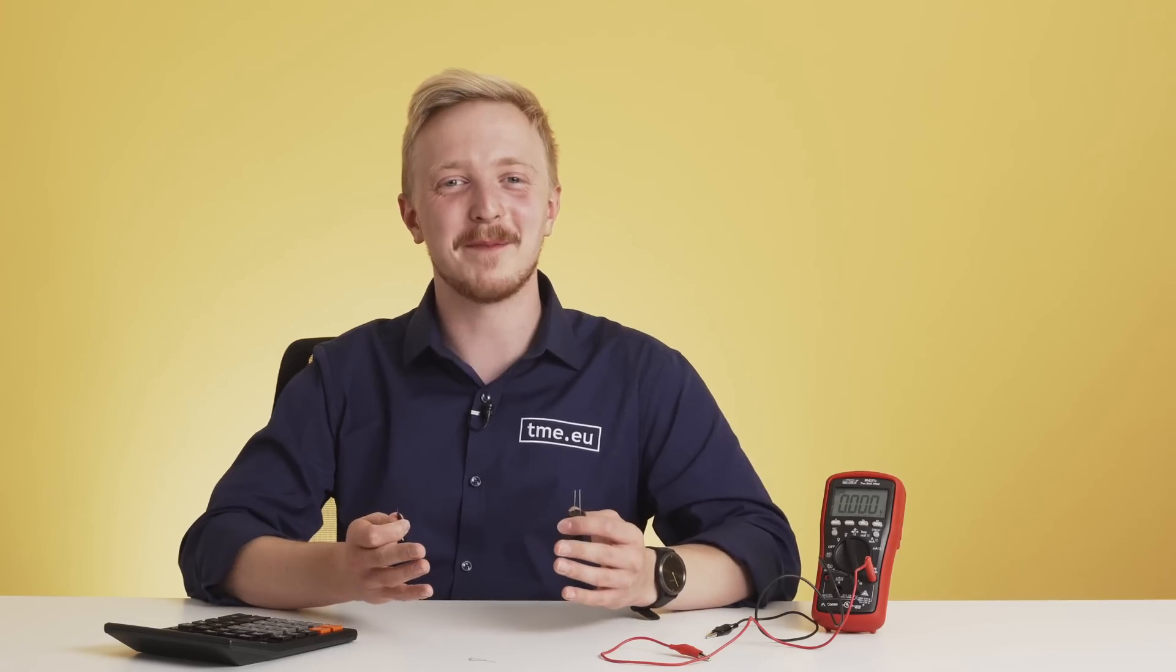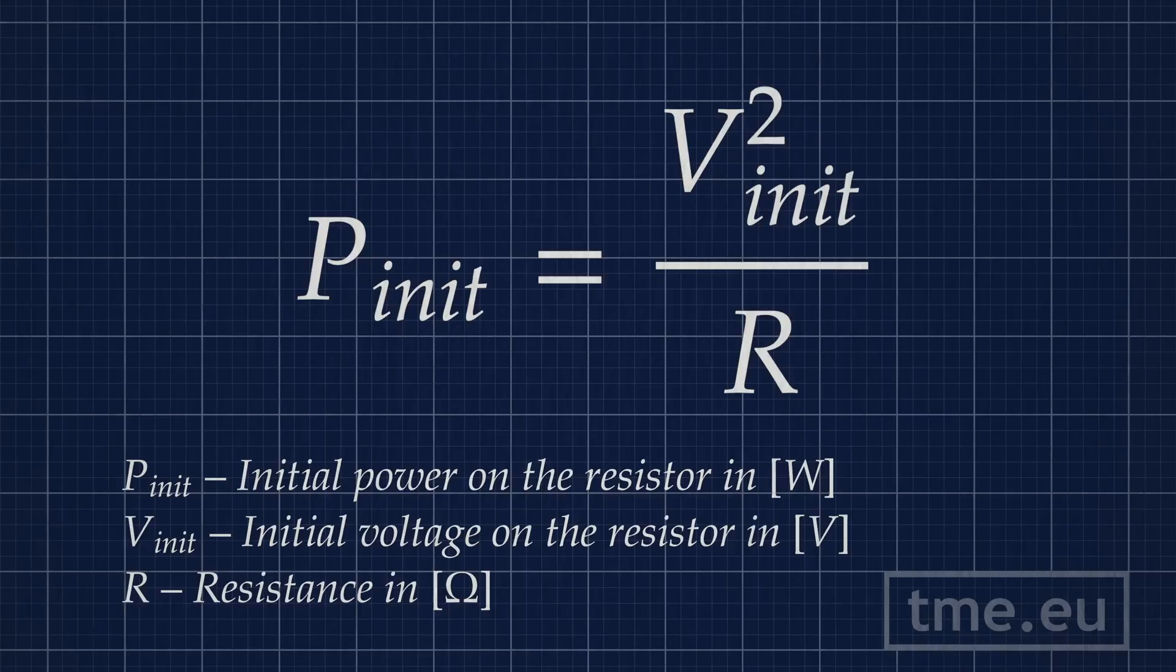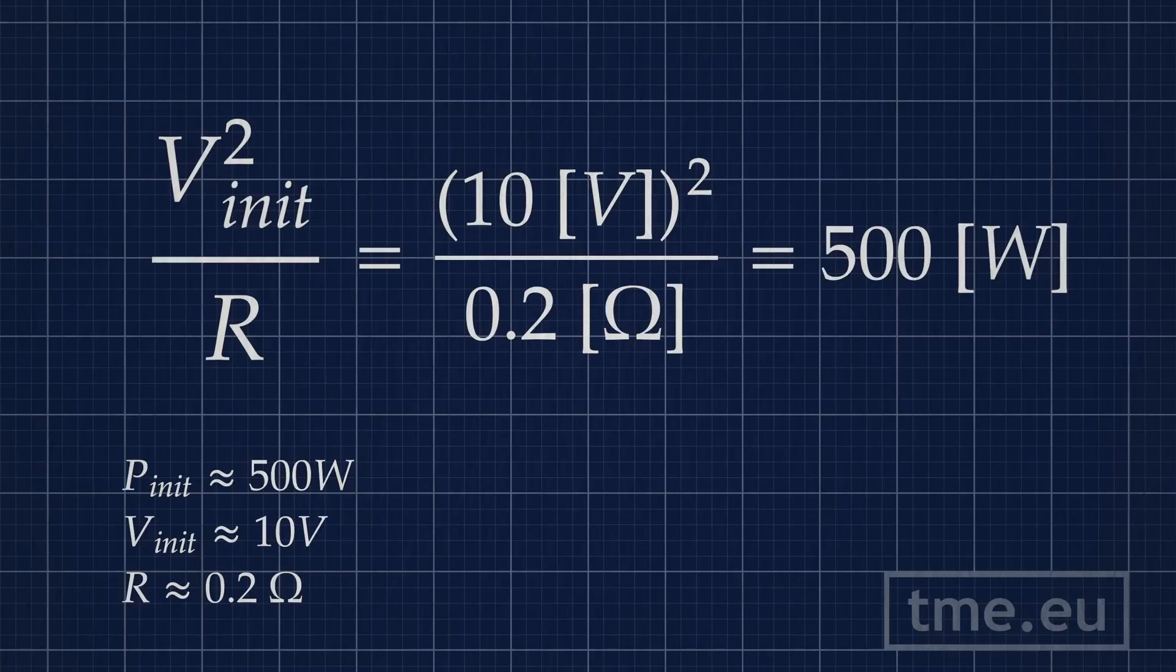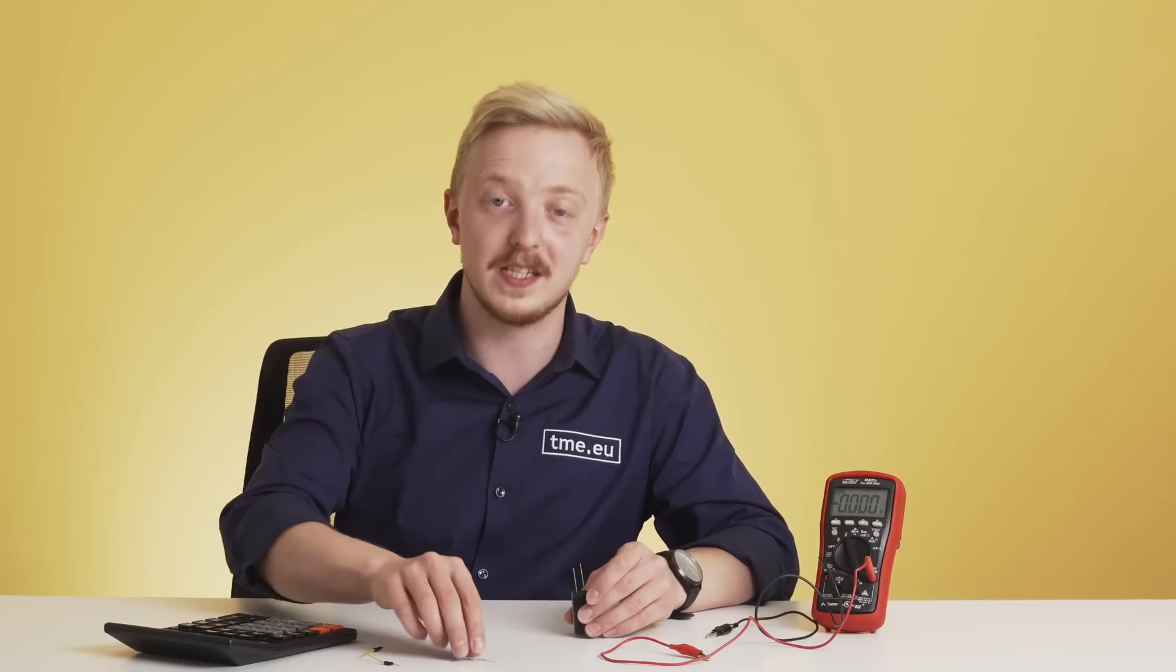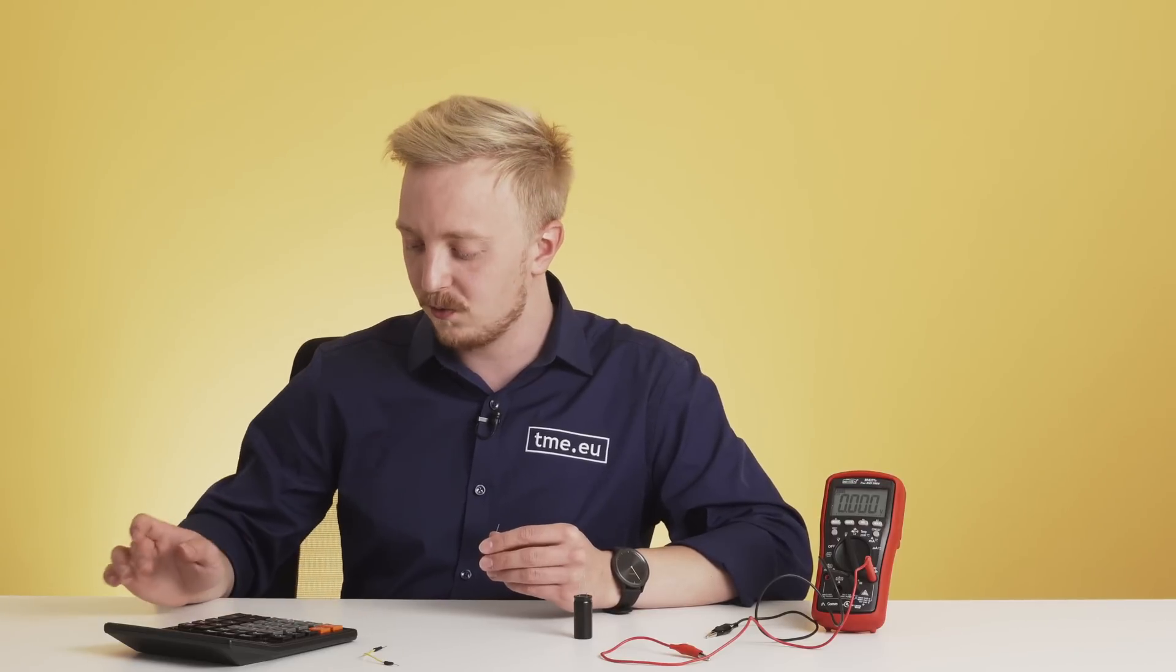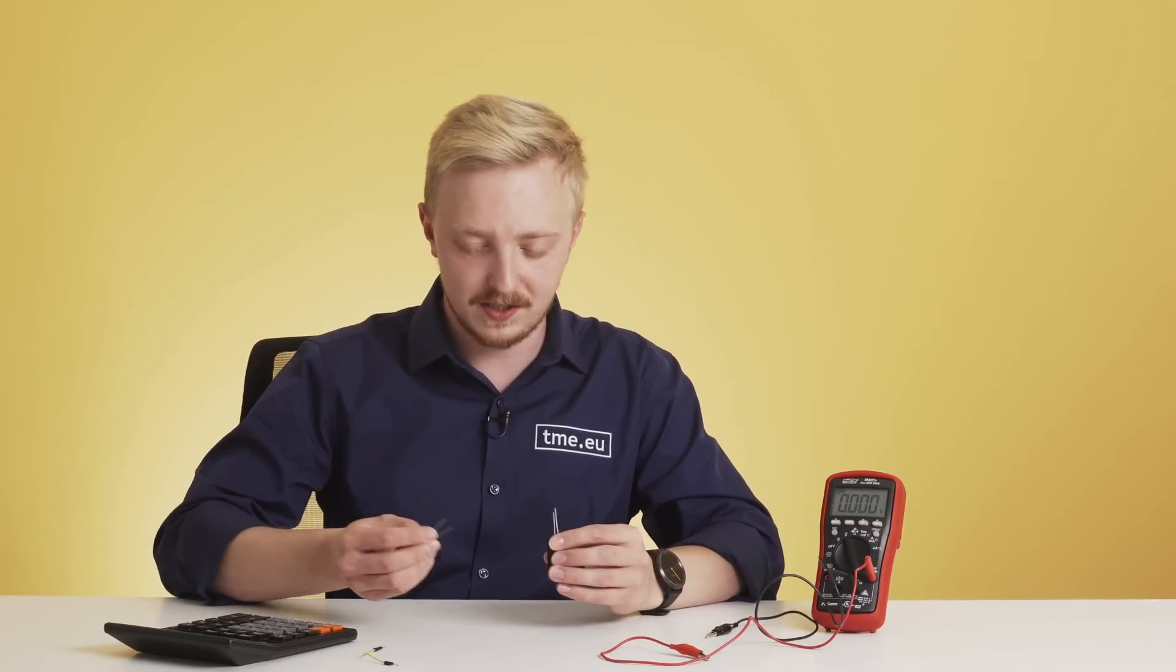Well, why did it happen? That was the initial power I've mentioned earlier. Here is the equation that can help us understand. Dividing the initial voltage squared by resistance gives us the amount of power that was going through the wire. 0.5 kilowatt is way too much for this little thing. Let's use a resistor with 360 ohms. Using the same equation, we can tell that it should take around 5.4 seconds. So let's try.